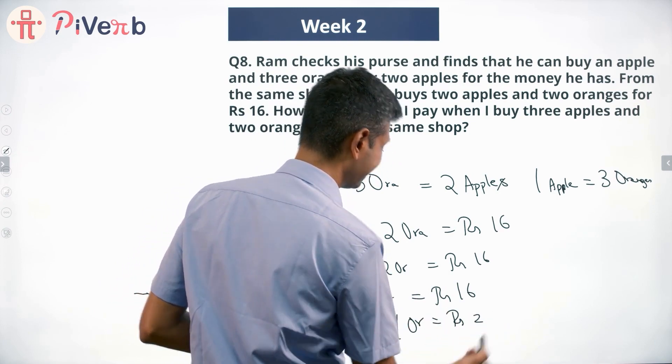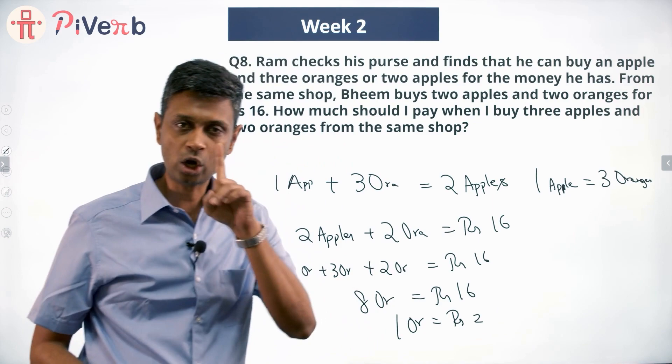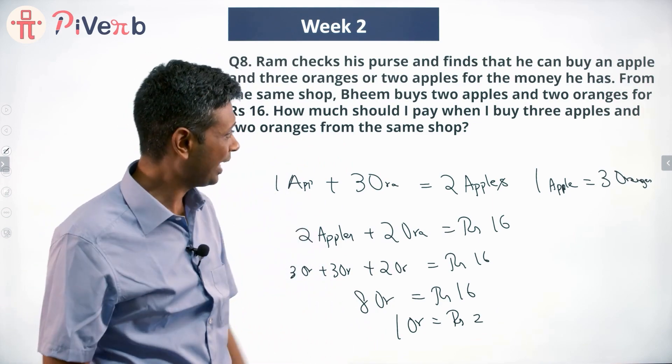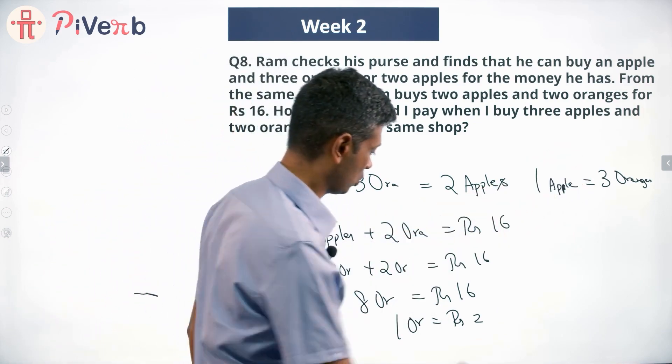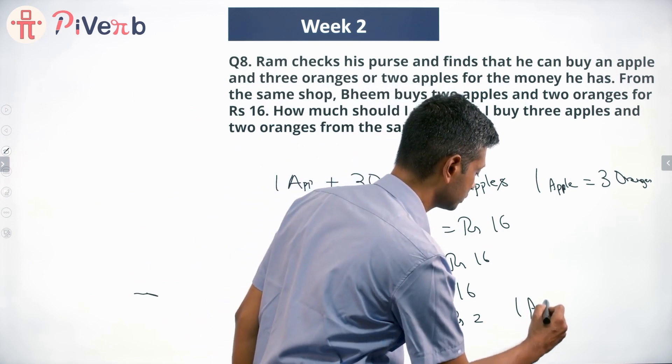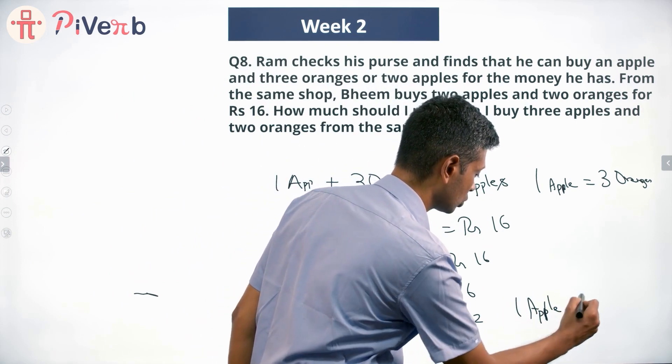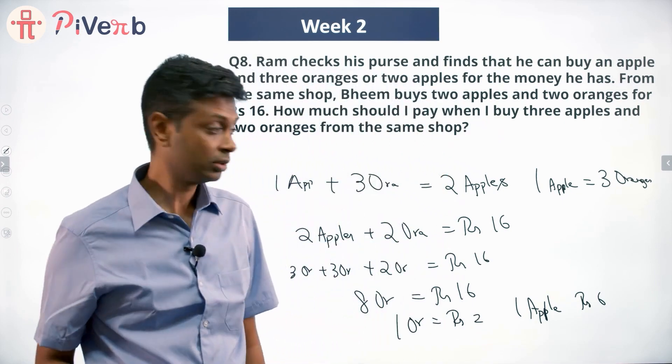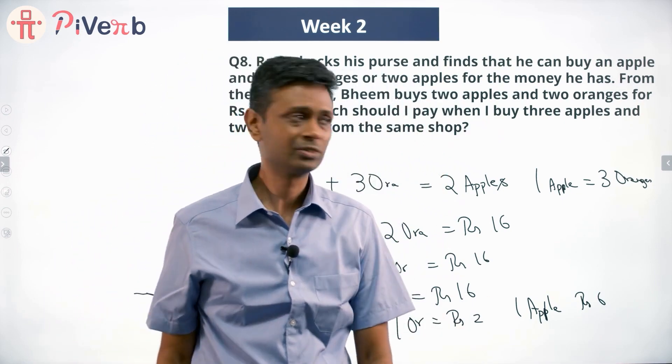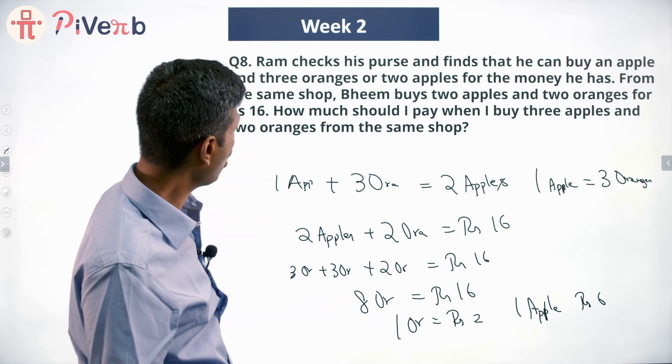...two rupees. 16 divided by 8 is 2. One orange costs two rupees. An apple costs the same as three oranges, or one apple costs six rupees. Orange costs two rupees, three into two is six rupees. Lovely.